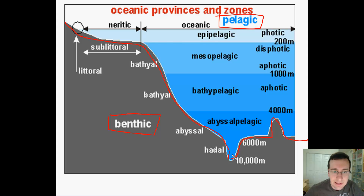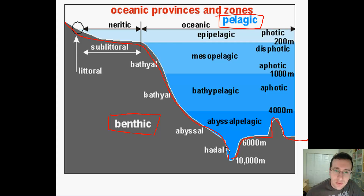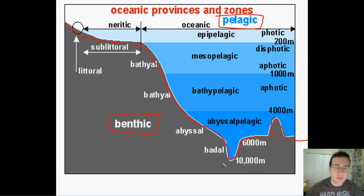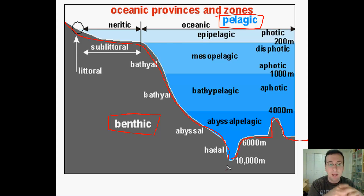Then there is the hadal zone, which goes deep into the trenches — the deepest parts of the ocean, 10,000 meters or below. It is the zone we know least about. But you still find life there because dead material and nutrients fall into the trenches, so you find decomposers and life forms that eat those decomposers there as well.